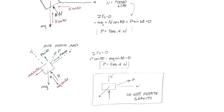A common mistake is rotating the free body diagram and drawing gravity going at an angle. Don't do that — it doesn't make sense and is not reality. Weight never acts at an angle like that. If you're going to rotate the axes, draw the free body diagram with the block in the rotated orientation and keep gravity pointing straight down.